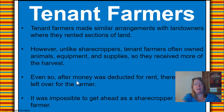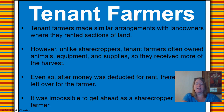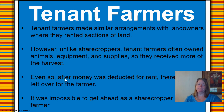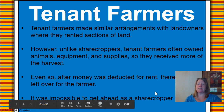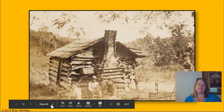This is a little different from sharecropping, but tenant farming also did not really work during this era. Remember, African Americans were free at this time, but many had to return to the plantations because they had a hard time finding work. Some plantation owners used sharecropping and some used tenant farming. Tenant farmers made similar arrangements with landowners where they rented sections of land. However, unlike sharecroppers, tenant farmers often owned their animals, equipment, and supplies, so they received more of the harvest. Even so, after the money was deducted for rent, there was little left over for the farmer himself. It was impossible to get ahead. This is an example of a cabin where some of the sharecroppers and tenant farmers lived.